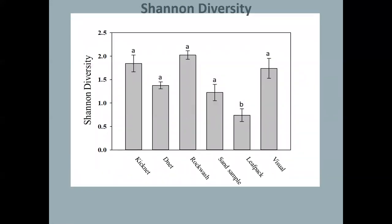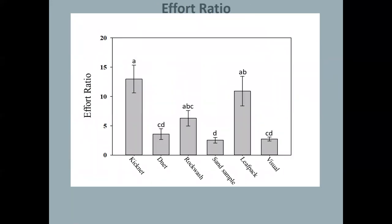Shannon diversity was similar among all the sampling methods except for Leaf Pack. So Leaf Pack did not perform well as far as diversity and is lower than everything else.